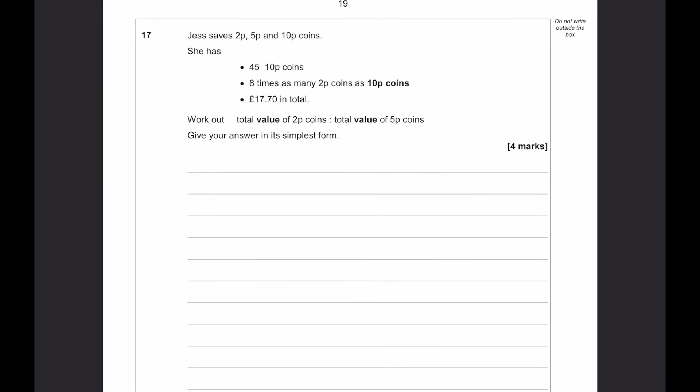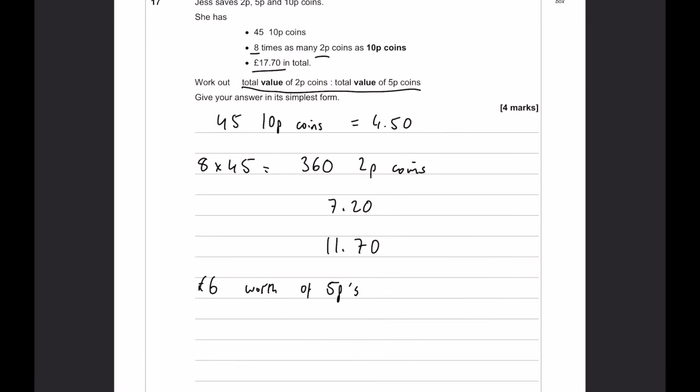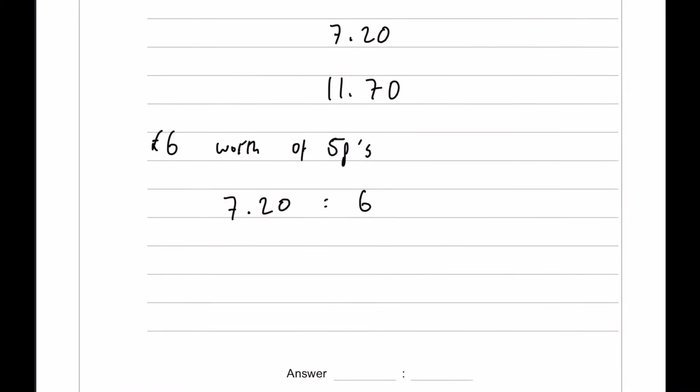Jess saves 2p, 5p, and 10p coins. She has 45 10ps, 8 times as many 2ps compared to the 10ps, and 17.70 in total. So, straight away, 45 10p coins, we're told 8 times as many 2ps compared to those 10ps. So, 8 times 45 is going to be 360 2p coins. 45 10p coins is going to be £4.50. 360 2p coins is going to be £7.20. So, if we add those two together, we're going to get £11.70, and we're told 17.70 in total. So, that means £6 worth of 5ps.